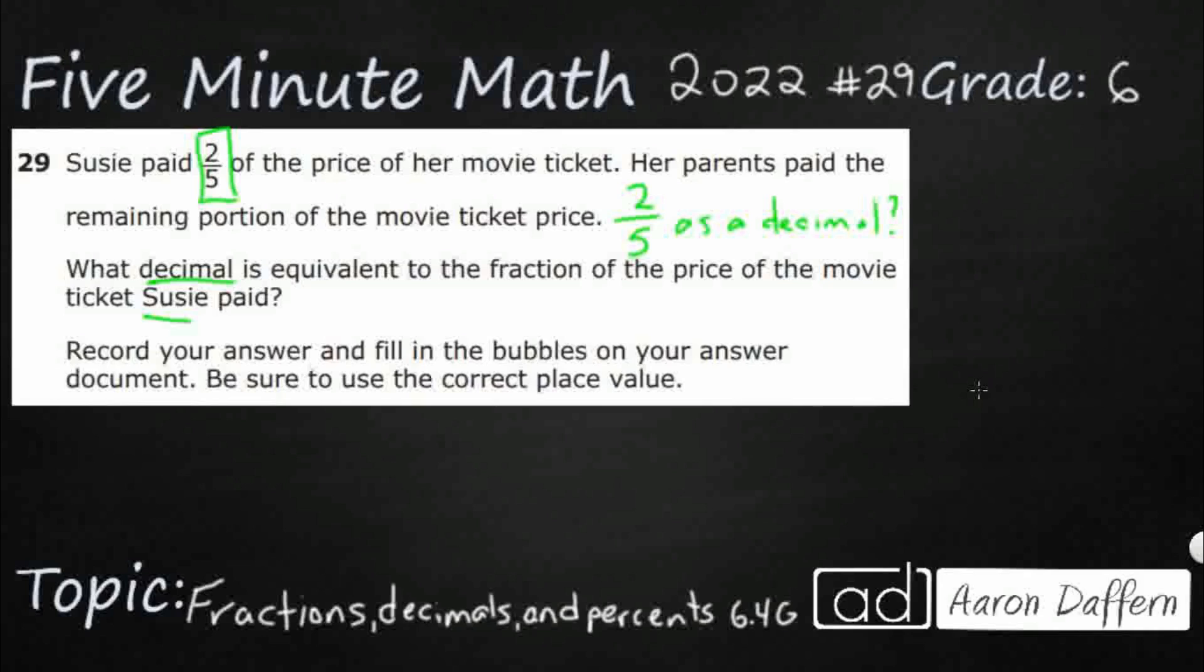Let me show you the option that always works. You can always take your fraction and divide up. So when I say divide up, that means you're going to take your denominator and divide it up into the numerator. So flip it on its side. This will always get you a decimal.